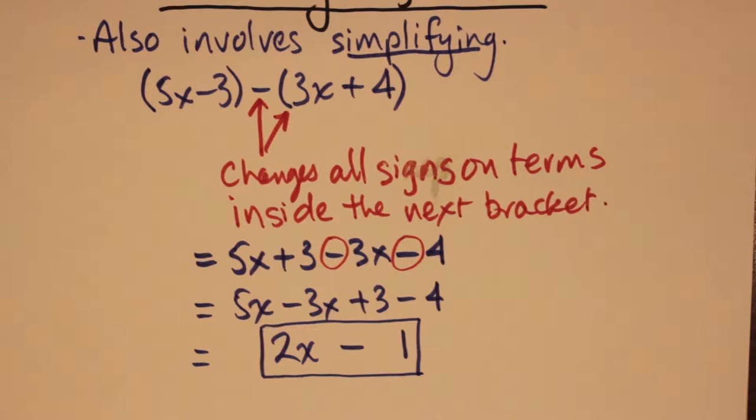So that one is fairly straightforward. We have an x and an x, you gather your x's, you gather your constant terms, and combine them. Combine the like terms into a single term.